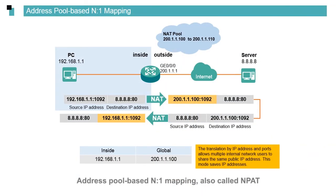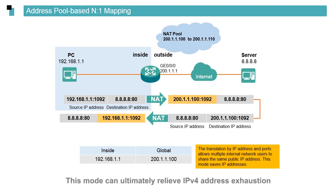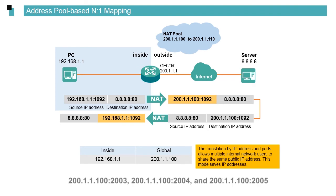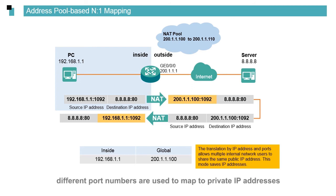The third type is address pool-based N:1 mapping, also called NAPT — that is, both user IP addresses and ports are converted. This mode can ultimately relieve IPv4 address exhaustion. For example, if there are three private IP addresses — 192.168.1.1, 192.168.1.2, and 192.168.1.3 — and only one public IP address, 200.1.1.100, we can configure port mappings such as 200.1.1.100:2003, 200.1.1.100:2004, and 200.1.1.100:2005. Although the same public IP address is used, different port numbers are used to map to each private IP address.